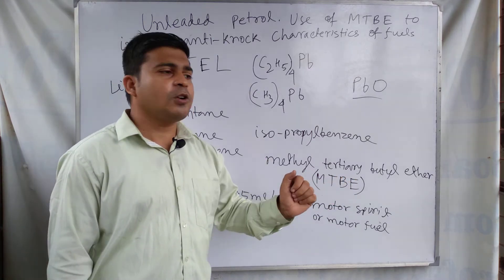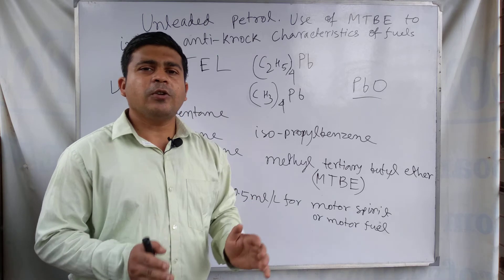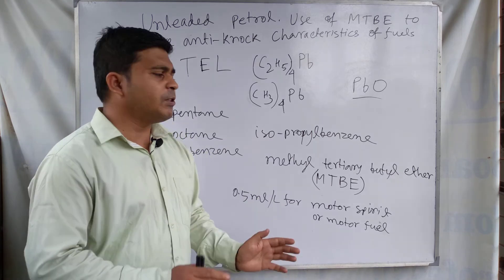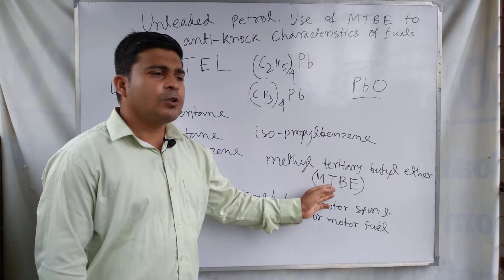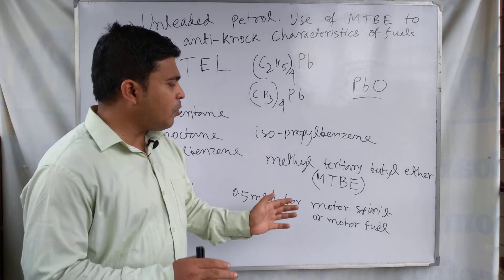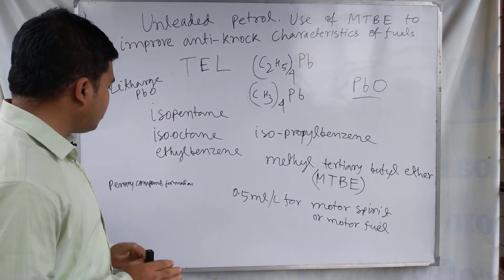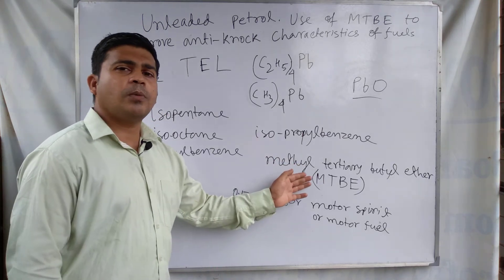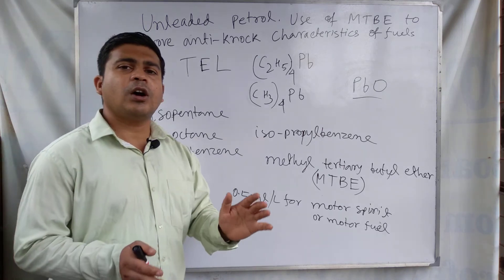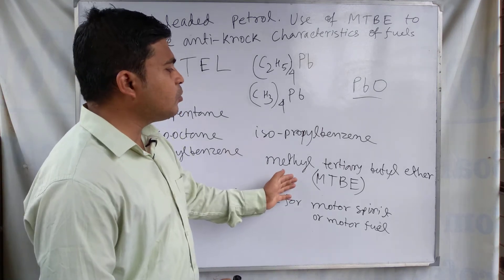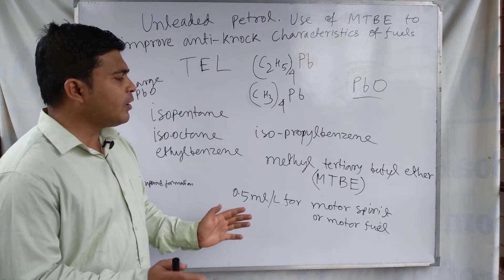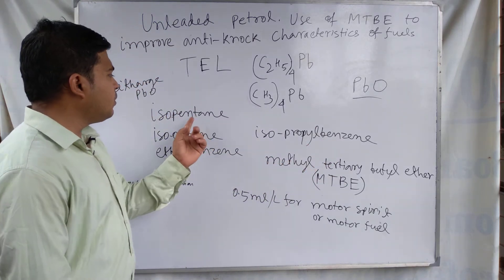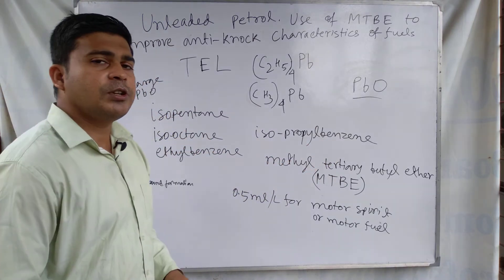The oxygen present in the ether group of MTBE can provide oxygen to the internal combustion engine during combustion. Another important factor is that MTBE reduces the formation of peroxide compounds and supplies oxygen to the internal combustion engine. For this reason, MTBE is preferred over isopropyl benzene, isopentane, isooctane, and ethyl benzene.